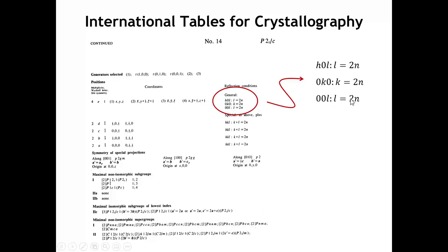What this means is that any reflection with indices H0L — that is, any reflection where K is zero — the L parameter must be an even number, a multiple of 2N. Any reflection that is a 0K0 reflection, where H and L are zero, the value of K must be an even number. And if it's not, that reflection is strictly forbidden and we will not see it. That's the idea of the reflection conditions.